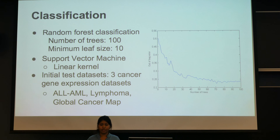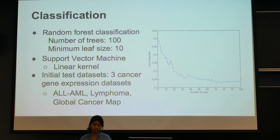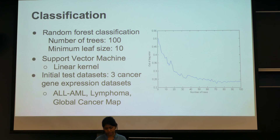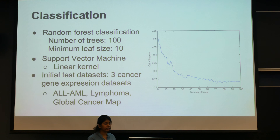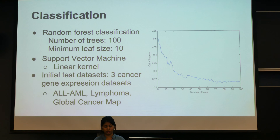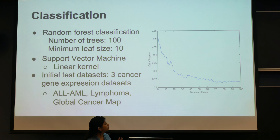We then used a set of standard classification techniques, comparing random forest and support vector machine. We tested our technique on three types of datasets: one differentiates between general cancer and control samples, and two others — ALL/AML and lymphoma — classify between two different types of cancer.